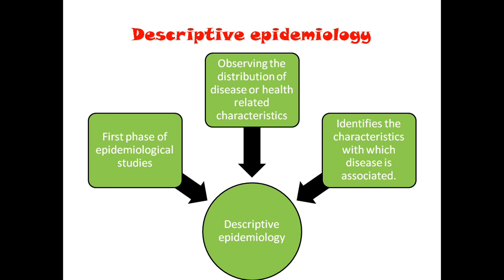We can say that this is the first phase of an epidemiological study. We will be observing the distribution of disease — how it is distributed among the people and what are the characteristics of the disease associated. These are the common things which we will be doing in descriptive epidemiology.